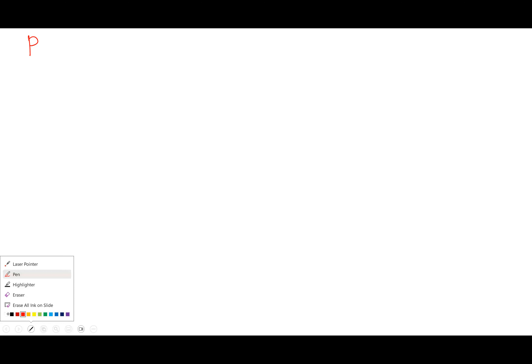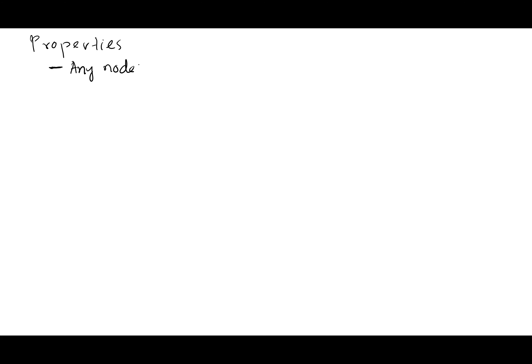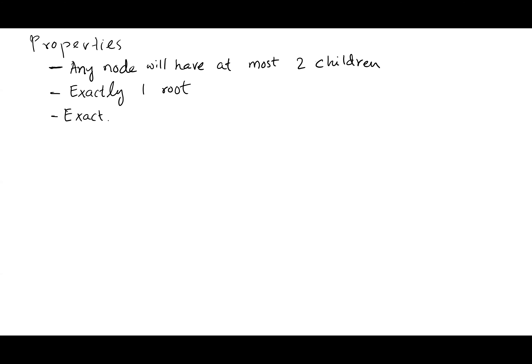First, let's talk about the different properties of a binary tree. The first property is that any node in a binary tree will have at most two children. Second, the tree will have exactly one root. And third, there will be exactly one path between the root and any node.